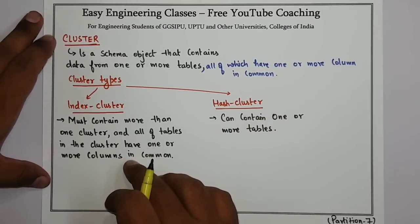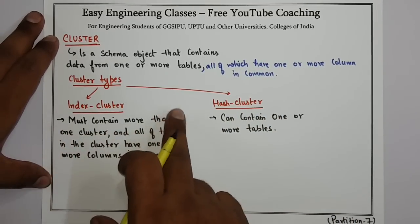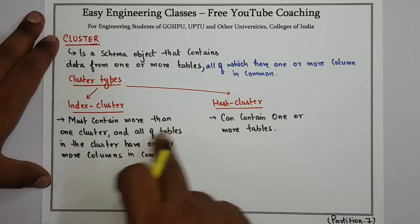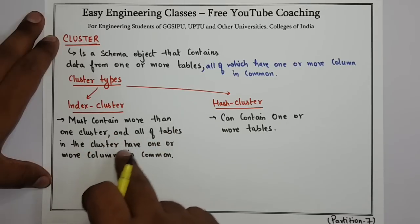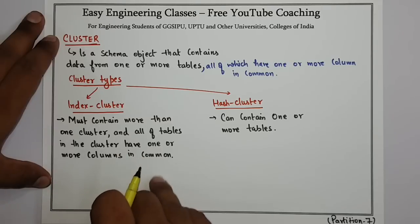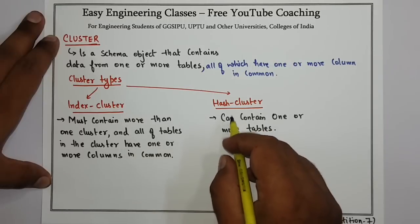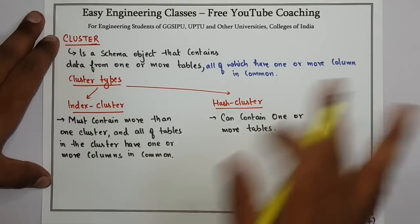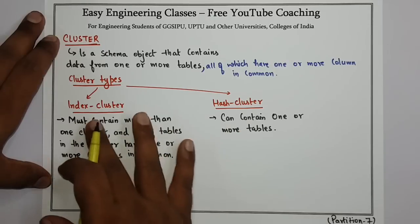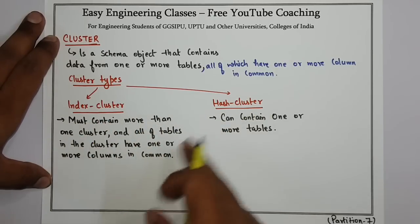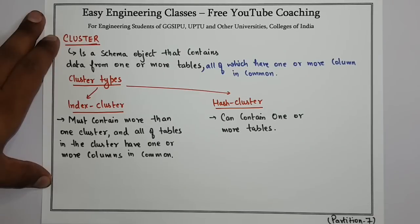An index cluster must contain more than one table, and all of the tables in the cluster have one or more columns in common. Whereas a hash cluster can contain one or more tables. This is the basic difference between index and hash cluster. You need to remember the definition of both index and hash cluster.